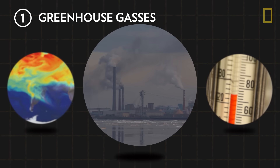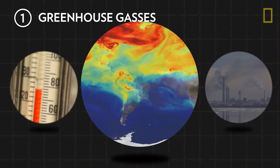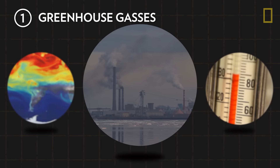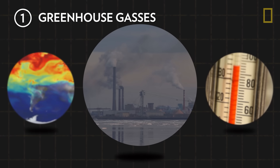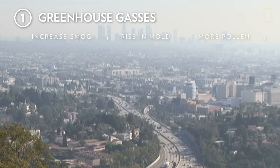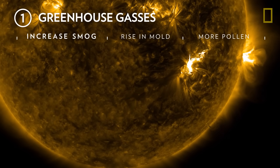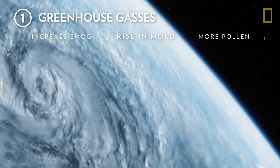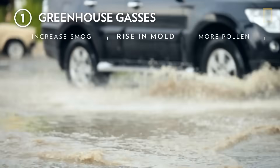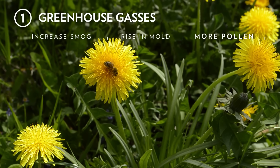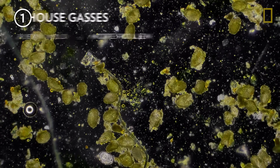This creates a cycle where air pollution contributes to climate change, and climate change creates higher temperatures. In turn, higher temperatures intensify some types of air pollution. For example, climate change increases smog because it forms in the presence of high heat and increased levels of ultraviolet radiation. More frequent extreme weather, such as flooding, contributes to damp conditions and therefore to a rise in mold. Warmer weather also leads to longer pollen seasons and therefore more pollen production.